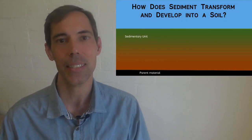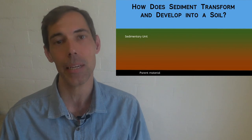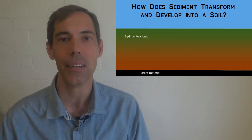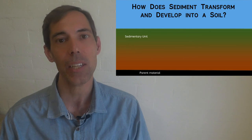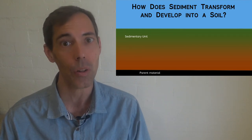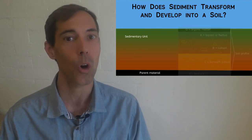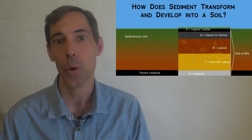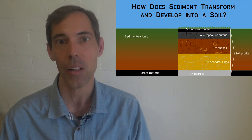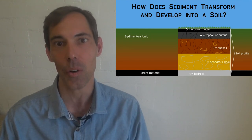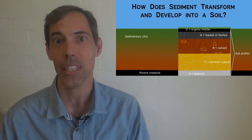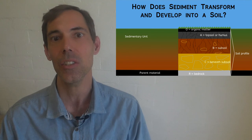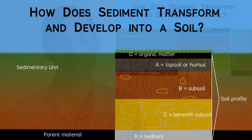Now that you have seen how individual sediments can be described, you can consider how a sedimentary layer could be transformed into a soil with internal soil horizons. A soil profile reveals an active zone of organic life at the surface, with gradations of different effects extending downward into a set of horizons.